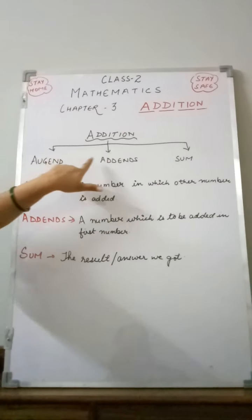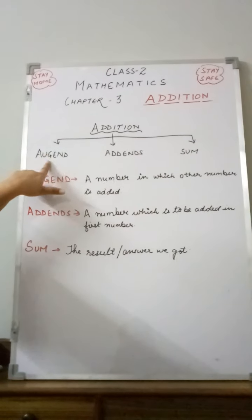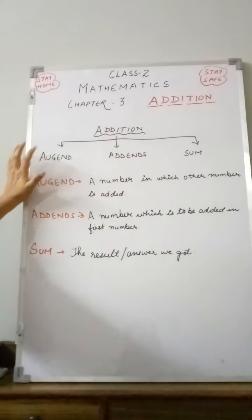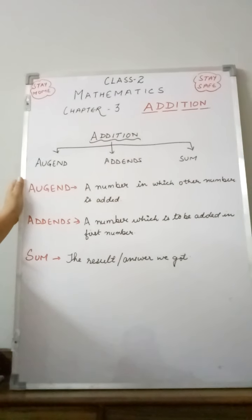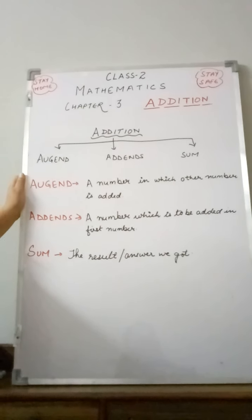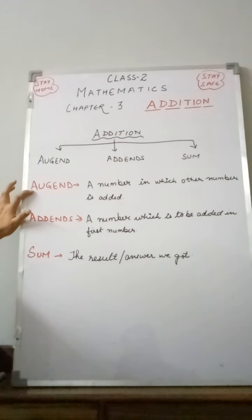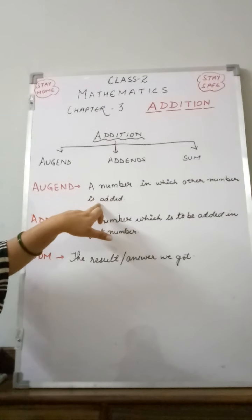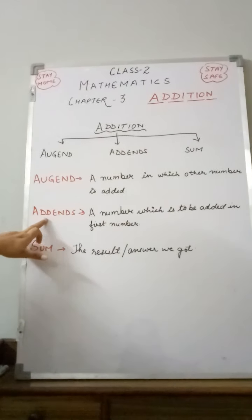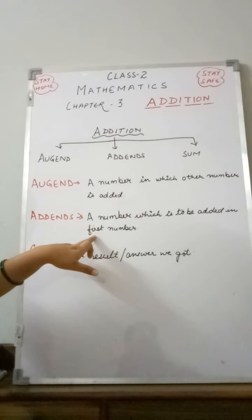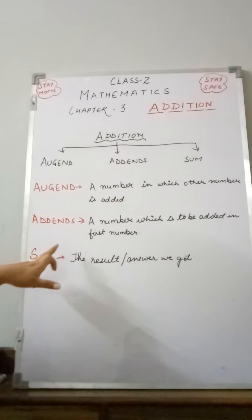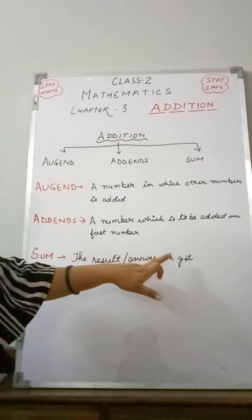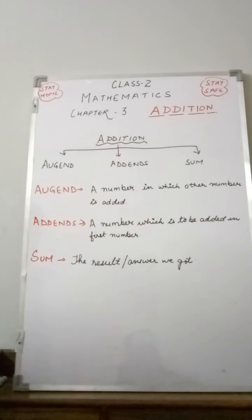Students, there are three important terms of Addition: Augend, Addend, and Sum. These three terms were already discussed in my previous chapter on understanding the number line, but I just want to clarify them again. Augend is a number to which another number is added. The second one, Addend, is the number which is to be added to the first number. And the third one is Sum — the result or answer we get is called the Sum.